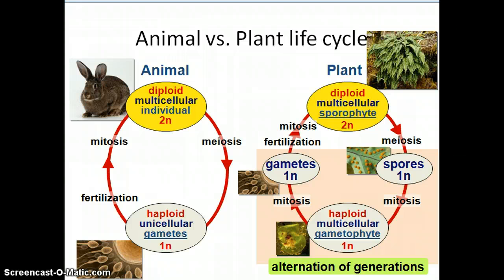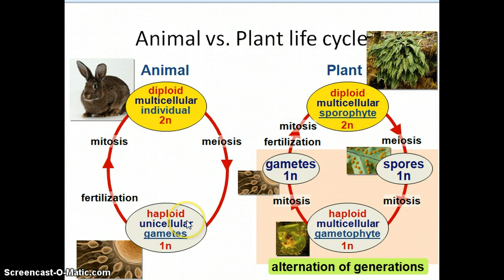Plant and animal life cycles have quite a bit in common, and surprisingly the plant has the more complicated life cycle. What they share is that both animals and plants alternate between a diploid and a haploid phase. Diploid means there are two sets of chromosomes in every cell, except for gamete cells.